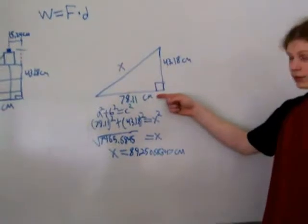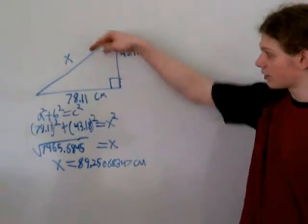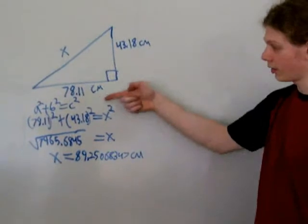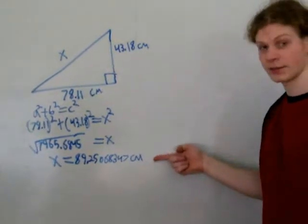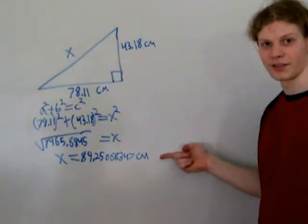So, here is the actual displacement in the x direction. To find the total displacement, we used the Pythagorean Theorem. And we solved for x. 89.25-ish centimeters.